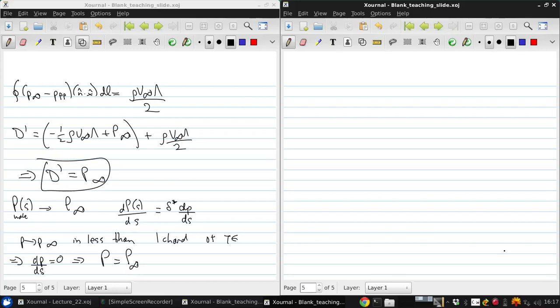So now that we've shown that the drag per unit span is equal to the far field momentum defect, we can further explore the relationship between the momentum defect as a function of location P of S and the profile drag.